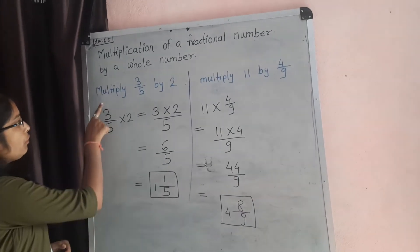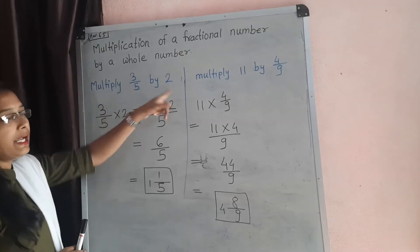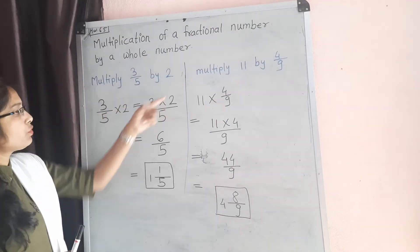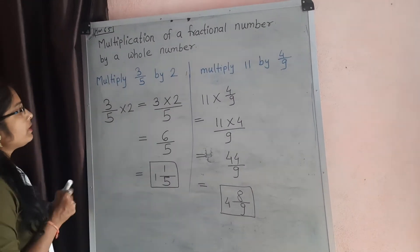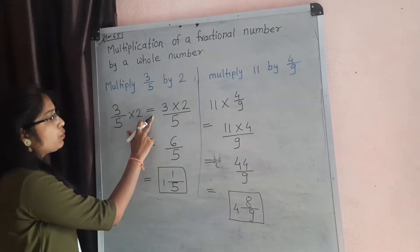First one is multiply 3/5 by 2. So we just solve that. First write here, 3/5 into 2 is equal to,